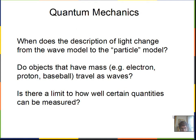And some questions that we might consider here is when is it appropriate to use the wave model versus the photon or particle model for light? Do objects that have mass, the electron, proton, baseball, footballs, cars, do they travel as waves between point A and point B? And is there a limit to how well we can make measurements for certain quantities?